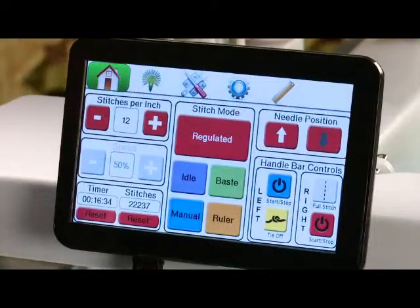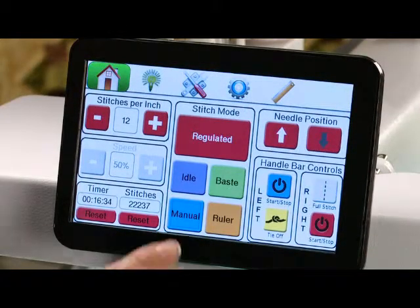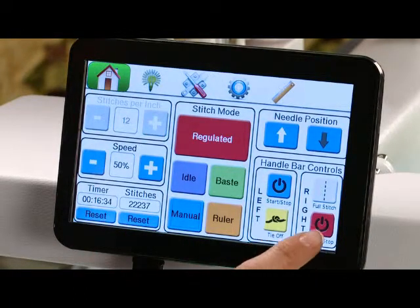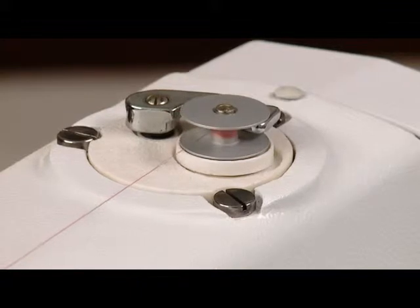Once you've engaged your bobbin winder, you want to turn your machine to manual mode and then press your start button. And your bobbin will wind.